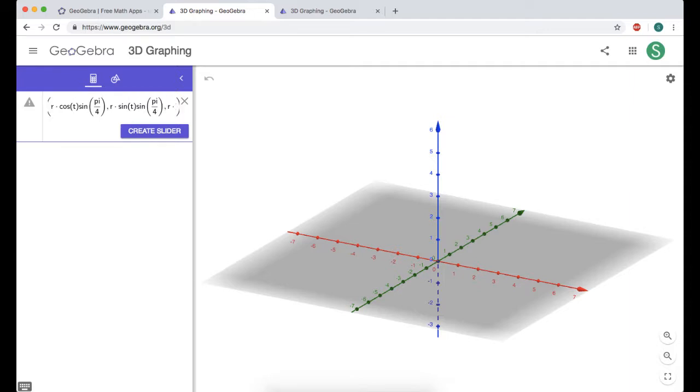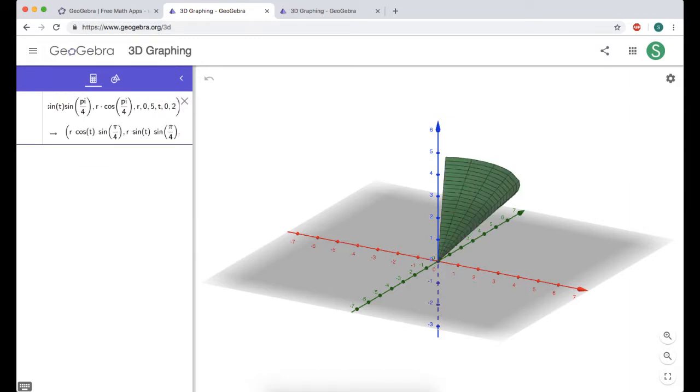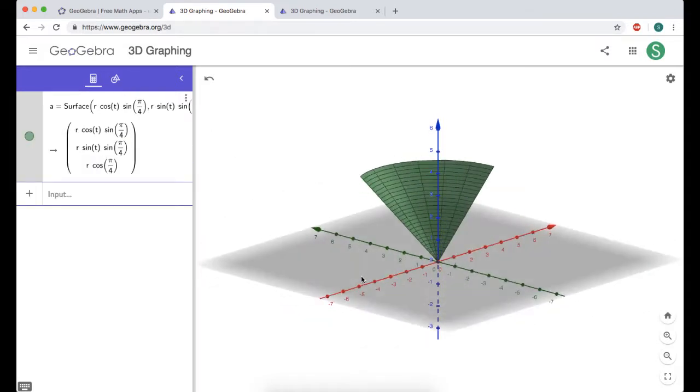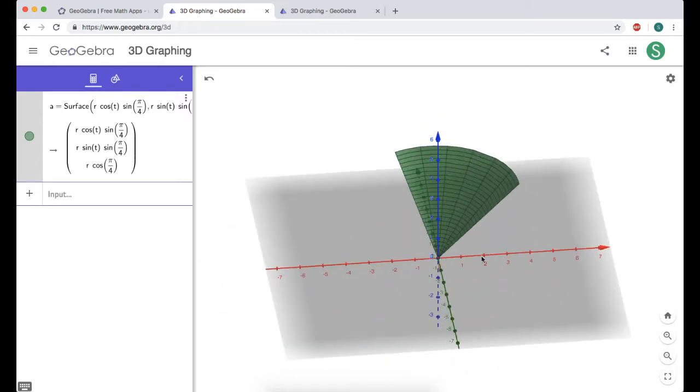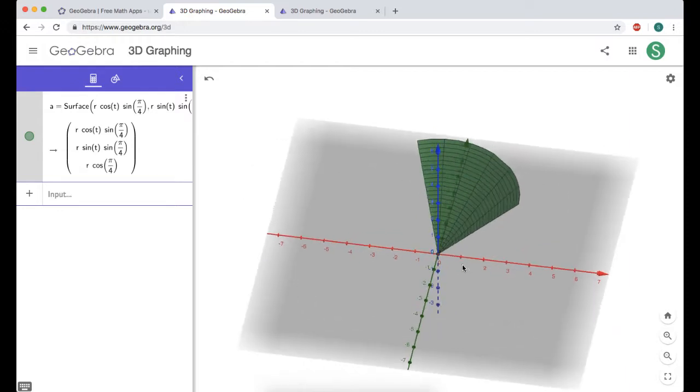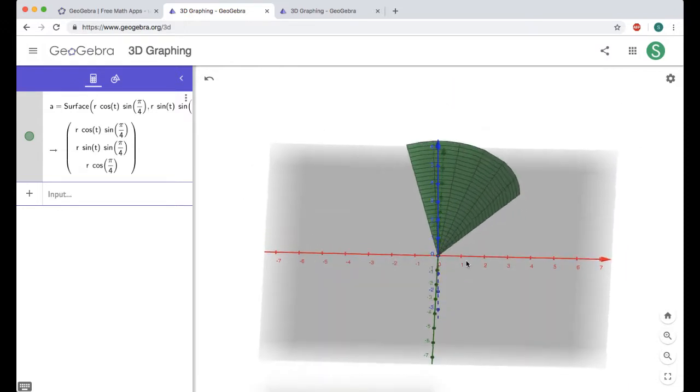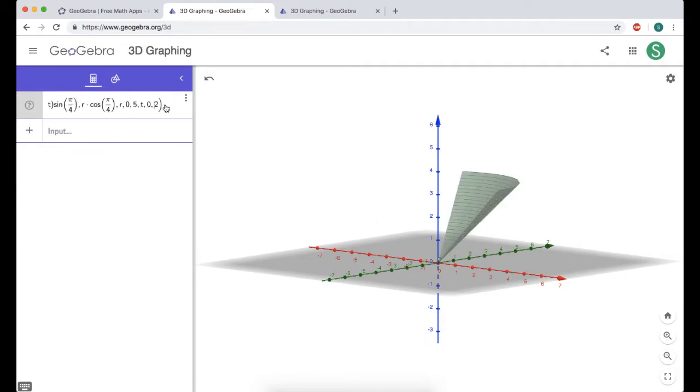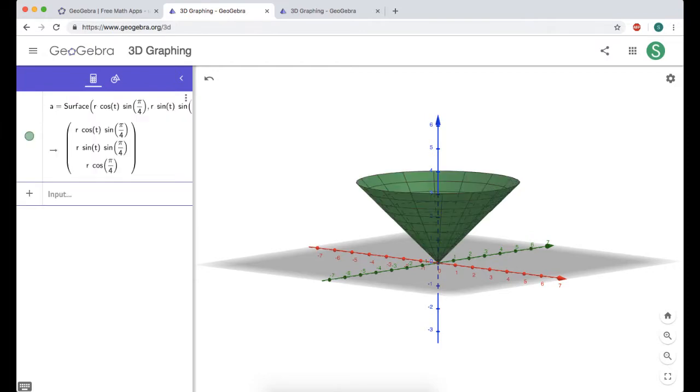So z is rho, which is r in our case, and then cosine of phi and phi for us is pi over 4. Now what I need to do is tell it my parameters. I have two parameters going on here. I have r and I have t. So I'll say r goes from, let's just say 0 to 5. And then t is going to go from 0 to 2 pi. You can see it kind of fills it in. It's just graphing this weird thing over here. That's 2 radians when you look down on it. So I'm going to go back and change this to 2 pi so that I can see the whole thing. And then press enter, and there you go.